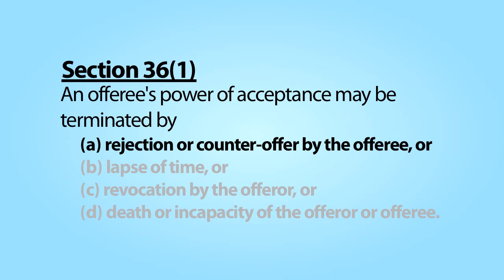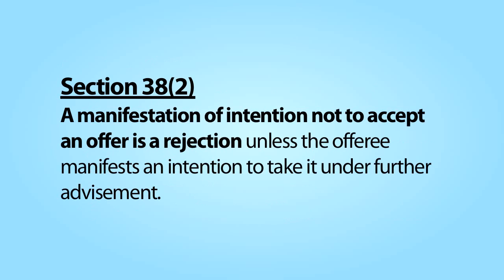Subsection A tells us that the offeree's power to accept an offer can be terminated by the offeree by either rejecting the offer or making a counteroffer. We will learn more about counteroffers in the next module. Let's consider rejection.